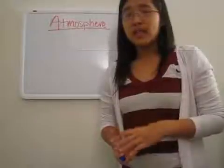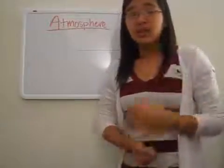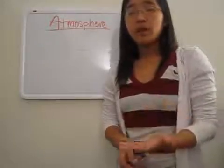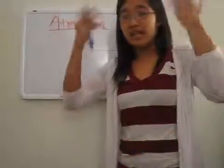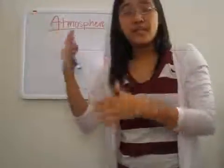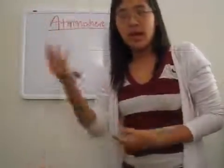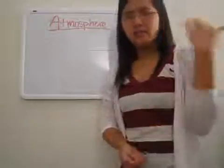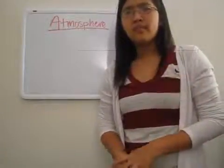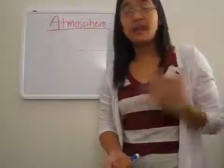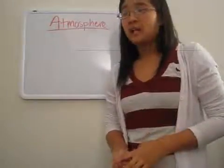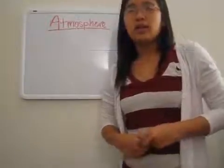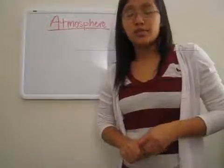A lot of the nutrient cycles have an atmospheric component to them. For example, water is evaporated into clouds and then moved through wind and comes back down as rain somewhere else. Likewise, nitrogen goes into the air — the vast majority of the atmosphere is made of nitrogen. And of course, oxygen goes around in the atmosphere, and a bunch of other smaller nutrients do too.